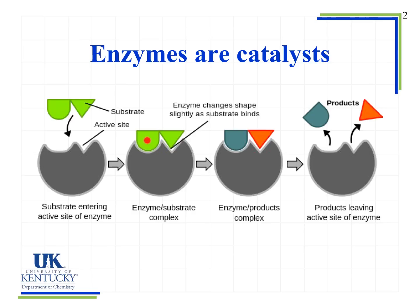The substrate comes into the active site, interacts with it, and products form within the enzyme-substrate complex. Then the products are released from the enzyme, which is now free and available to catalyze another reaction of the same type. We start with the substrate entering the active site as separate species, then form an enzyme-substrate complex, then an enzyme-products complex where the substrate has been split into two parts, and finally the products leave the active site.